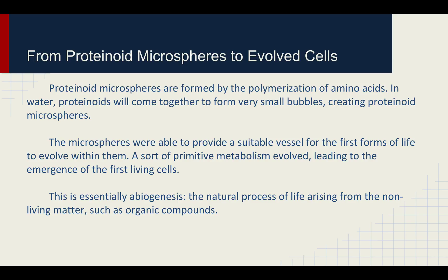From protonoid microspheres to evolved cells: protonoid microspheres are formed by the polymerization of amino acids. In water, they will come together to form very small bubbles, creating protonoid microspheres. These microspheres were able to provide a suitable vessel for the first forms of life to evolve, and things like chloroplasts would form inside of them, creating our first idea of a cell. A sort of primitive metabolism evolved, leading to the emergence of the first living cells.